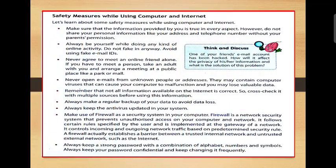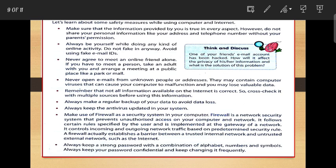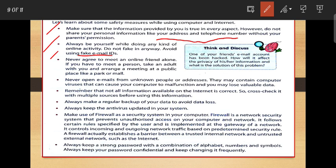Next is safety measures while using the internet. Make sure that the information provided by you is true in every aspect. However, do not share your personal information like your address or telephone number without your parents' permission. Always be yourself while doing any kind of online activity — do not fake in any way. Avoid using fake email IDs. Never agree to meet an online friend alone. If you have to meet a person, take an adult with you and arrange a meeting at a public place like a park or mall.